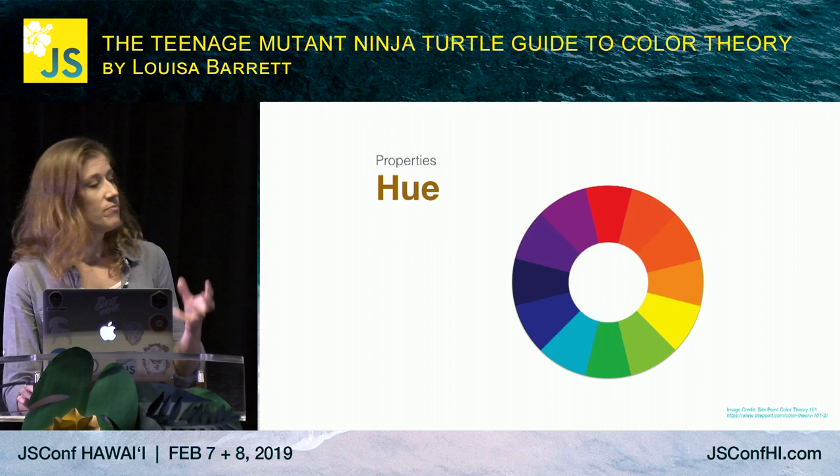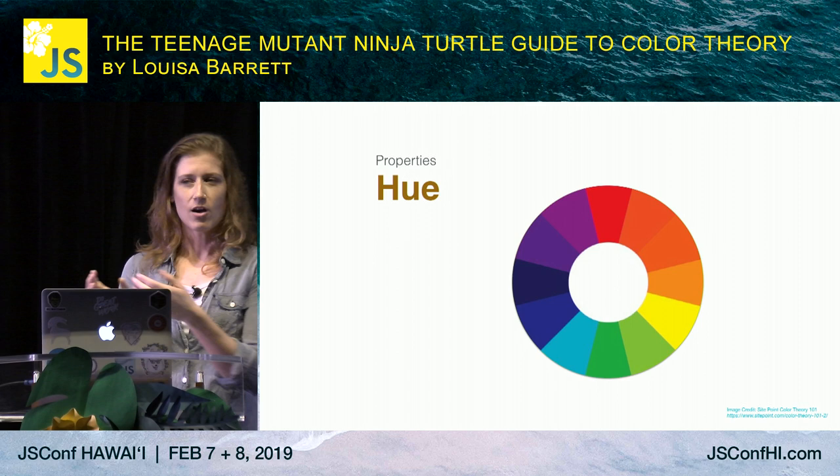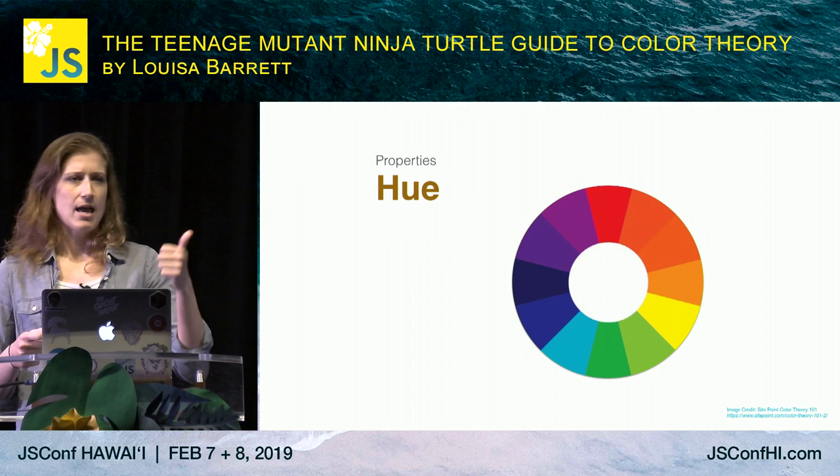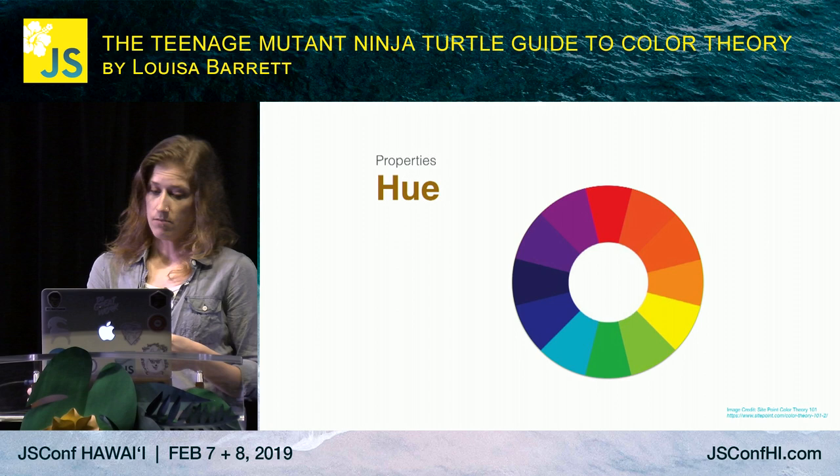First, we're going to talk about hue. Hue is essentially almost a synonym for color — it is a pure color. Something considered a hue is essentially like the colors you might find in an eight-pack of crayons: the colors that have names like red, blue, or green — colors you can identify with a word. Those are often referred to as hues.